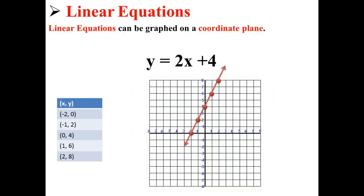Now that we have these ordered pairs, we can plot them on the coordinate plane. Notice that because we have a linear equation, our graph is of a straight line.